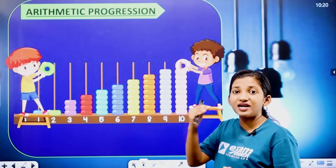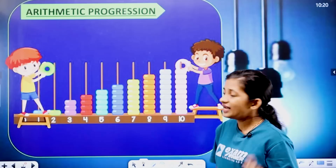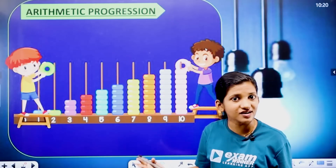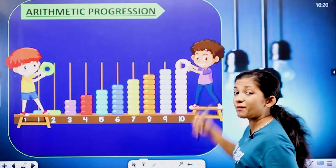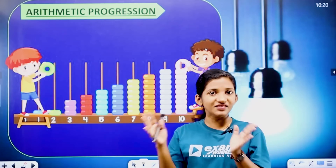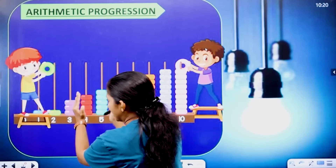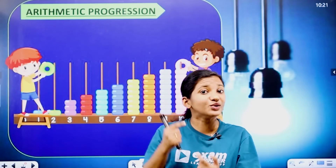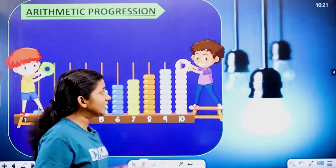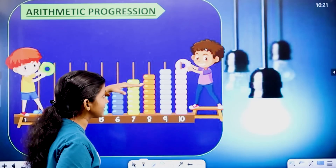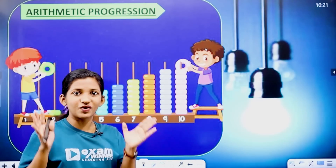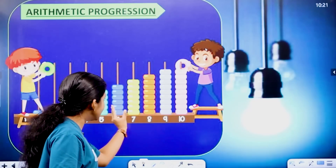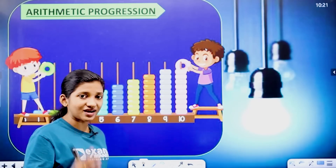Then we have one circle. If you have 10 circles arranged across rows, then we have two circles in the third row — two circles arranged in the Abacus. This is an arithmetic progression. How do we have an arithmetic progression? You have two circles arranged in the Abacus.